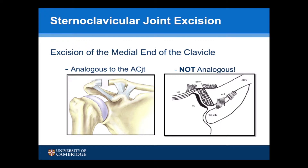Previously, open excision of the medial end of the clavicle for osteoarthritis has been based on the principles used at the lateral end of the clavicle. However, the two are not analogous. At the lateral end, the coracoclavicular ligaments are strong and will hold the clavicle in position regardless of the amount of bone removed. However, at the medial end, the costoclavicular ligaments are not strong — so if you remove any of the medial end of the clavicle, no matter what happens, it will collapse down.